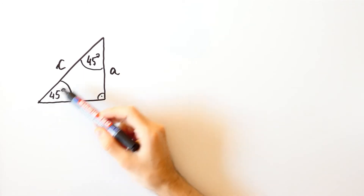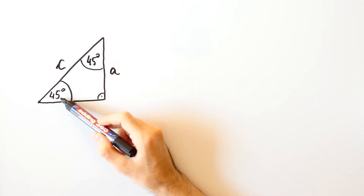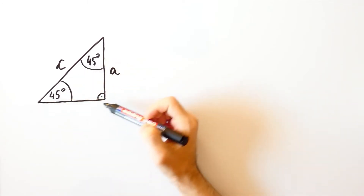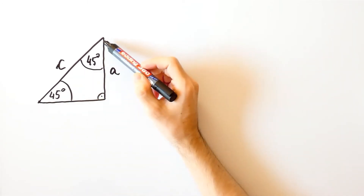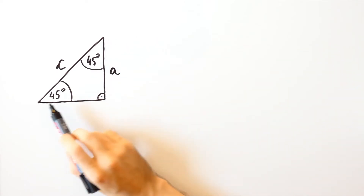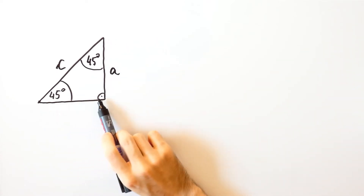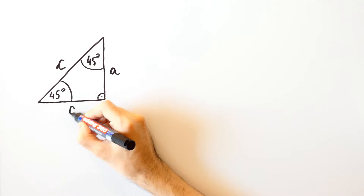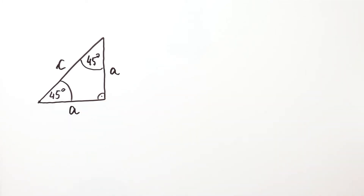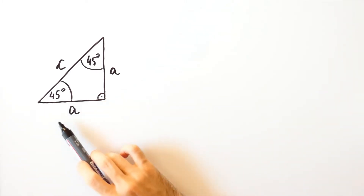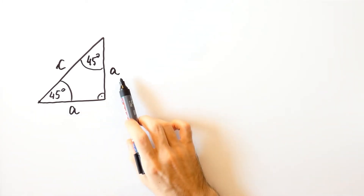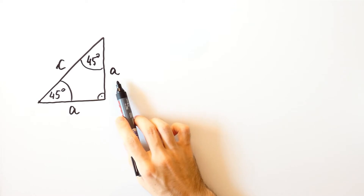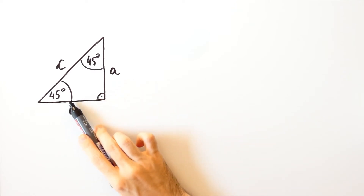Now, these two angles are equal, which means that this triangle is an isosceles triangle — that is, this side is also equal to a. From here, we could use the Pythagorean theorem to find the sine and cosine of 45 degrees.